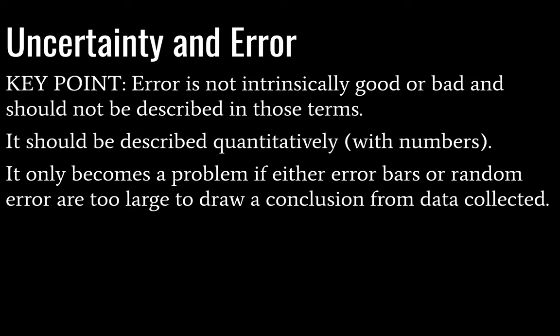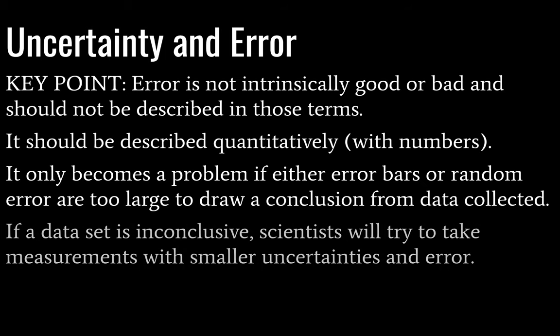Where error becomes a problem is where your error bars or random error are so large that you can't draw a conclusion from the data that you collect — there's no visible trend, and your trend line or curve doesn't really fit your data points. That's when it becomes a problem — it means your data is inconclusive. If that happens, you need to try to decrease your uncertainty or your error, and usually the error we're talking about there is random.